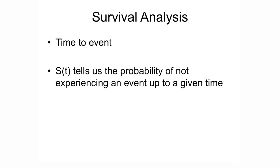Survival time tells us the probability of not experiencing an event up to a given point in time, or surviving beyond time t. The outcome has two parts: t, which equals time, and c, which equals event occurrence — yes versus no. With Poisson we're wondering how many relapses, whereas with survival analysis we ask how long until they relapse. Poisson and survival analysis are related: if Poisson gives an average of three relapses per year, then survival analysis would give an average time to relapse of four months — one year divided by three.